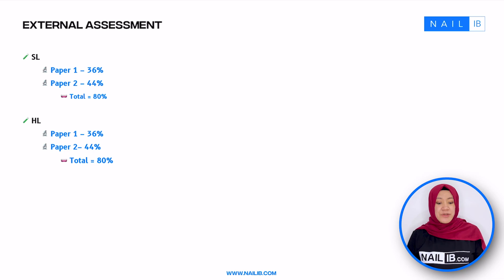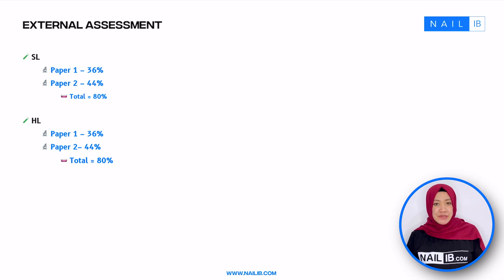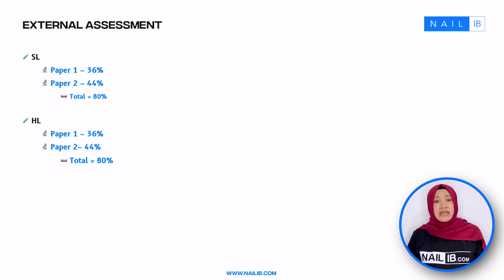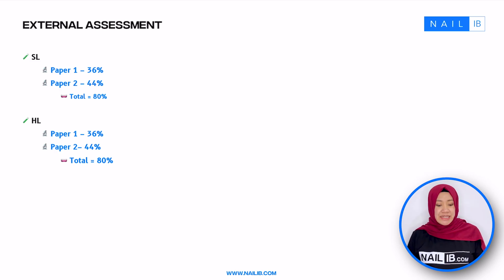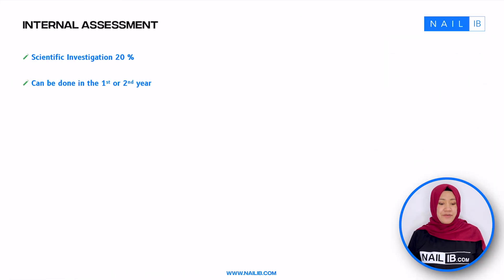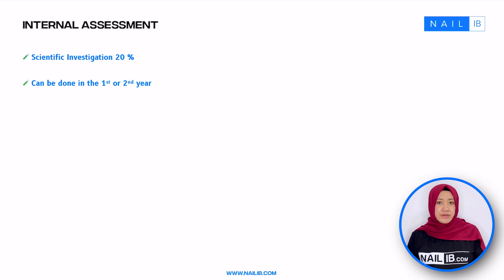External assessment, together with internal assessment, will decide your final IB grade up to 80%. The external assessment is an exam assessed at the end of your IB program, either in May or November. External assessment consists of two papers — paper one and two. The weight for both SL and HL is the same: paper one is 36% and paper two is 44%, together making up 80%. The remaining 20% comes from internal assessment, a scientific investigation that you could do in either your first or second year, depending on the timeline from your chemistry teacher.